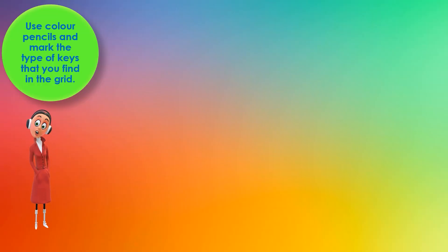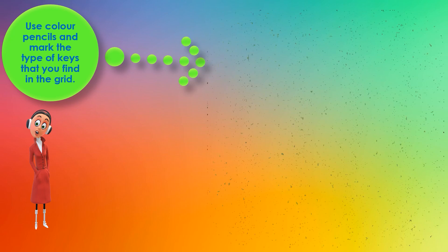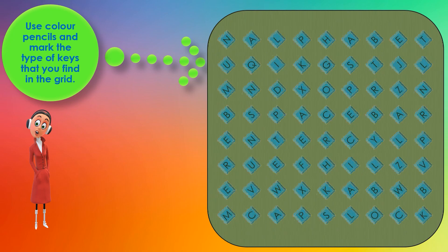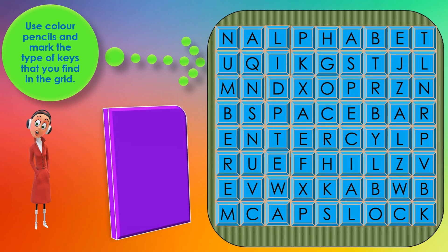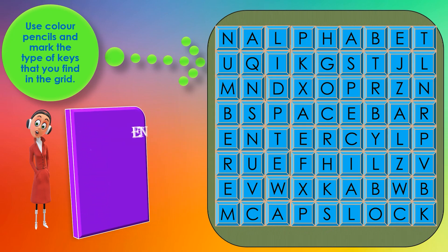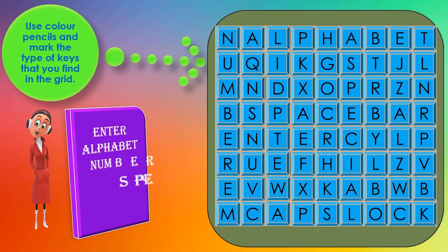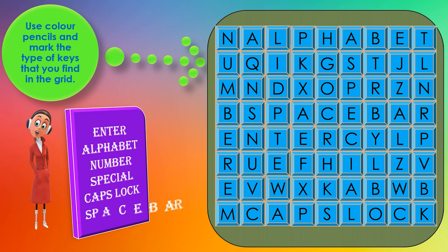Use color pencils and mark the type of keys that you find in the grid. The key types include: Enter, Alphabet, Number, Special, Caps Lock, and Space Bar. Now I am going to show you the types of keys in the grid — watch closely as the colors change.